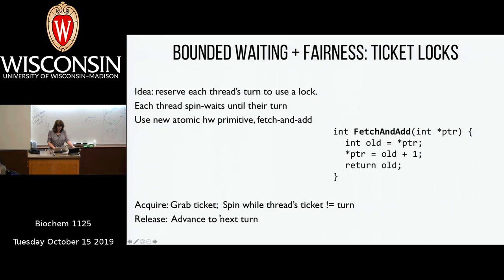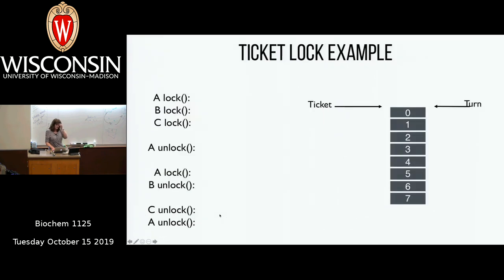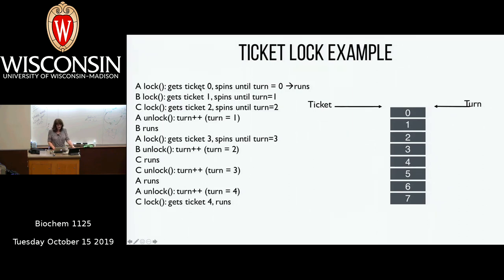Conceptually: three threads A, B, C all call lock. A calls fetch-and-add on ticket, gets 0, ticket increments to 1. A spins until turn equals its ticket value of 0 — it is, so A enters the critical section. Meanwhile B and C each atomically get ticket values 1 and 2. When A unlocks, it increments turn to 1, so B gets to run next. This guarantees bounded waiting and fairness across all threads.